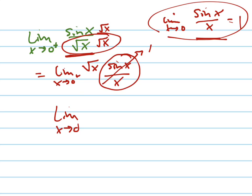Now why does it have to be from the right? Can you tell why? Because can I be going to 0 from the left? I can't.